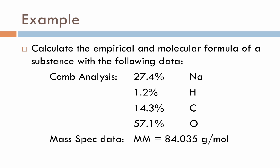As a way of wrapping this whole thing up with empirical and molecular formulas here, I have an example problem. I think you guys are ready to actually try this on your own. Down below here we have the combustion analysis data that can be used to calculate an empirical formula. Some number of NAs combined with some number of Hs combined with some number of carbons combined with some number of oxygens.